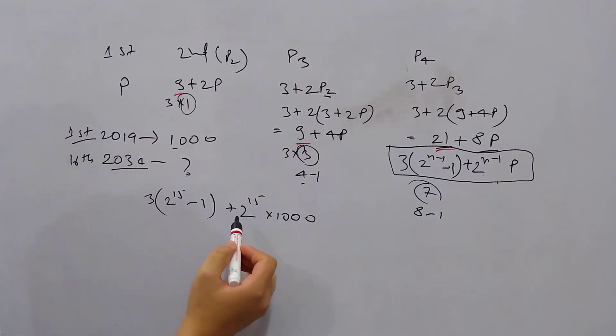So this should be the answer. But to match the option, we can take 2¹⁵ as a common factor. We are left with 1000. And it will become 3, so 1003, and minus 3. So this is the answer.